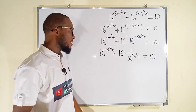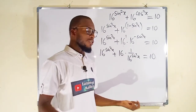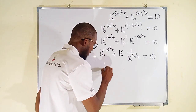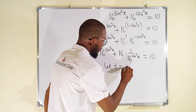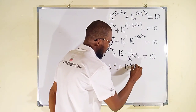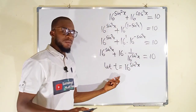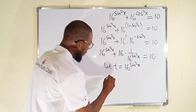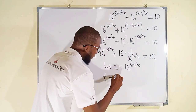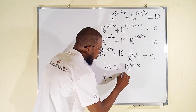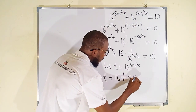So what we are going to do next is a kind of t-substitution. Let t equal to 16 raised to the power of sine squared x. Wherever we see this, we replace it with t. So this becomes t plus 16 multiplied by 1 divided by t, and to the right we have 10.